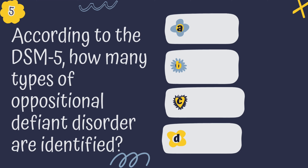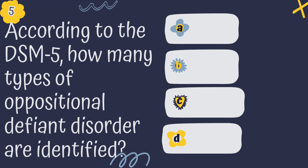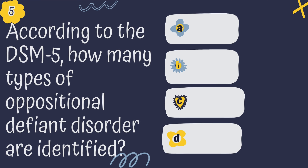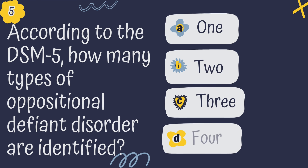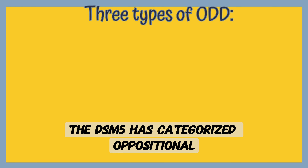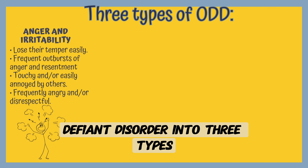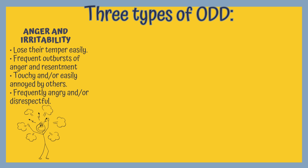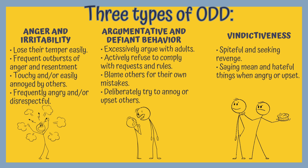Question 5. According to DSM-5, how many types of oppositional defiant disorders are there? A. 1, B. 2, C. 3, or D. 4? The correct answer is C, 3. The DSM-5 has categorized oppositional defiant disorder into three types: angry/irritable mood, argumentative or defiant behavior, and vindictiveness.